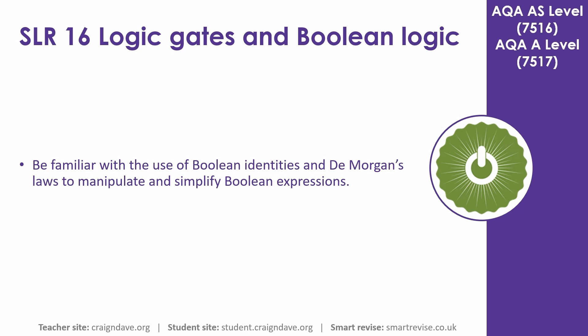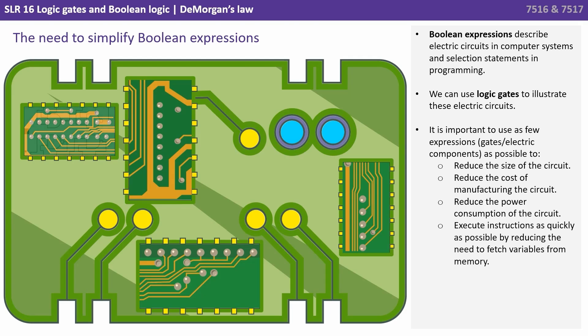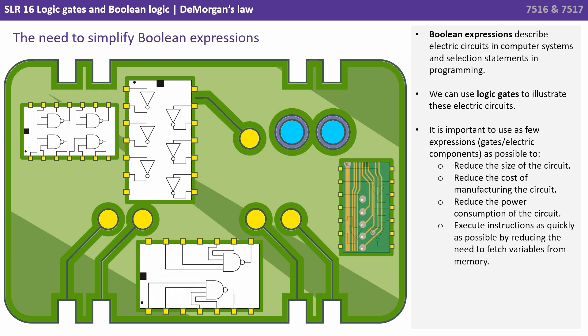In this video, we become familiar with Boolean identities and DeMorgan's Law to manipulate and simplify Boolean expressions. Boolean expressions describe electric circuits in computer systems and selection statements in programming. We can use logic gates to illustrate these electric circuits. It's important to use as few expressions or gate electronics components as possible to reduce the size of the circuit, reduce the cost of manufacturing the circuit, reduce the power consumption of the circuit, and therefore execute instructions as quickly as possible by reducing the need to fetch variables from memory.